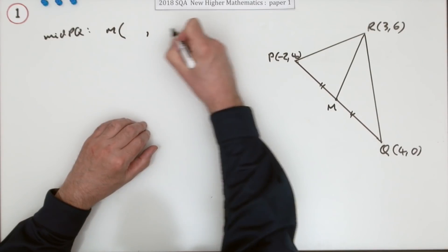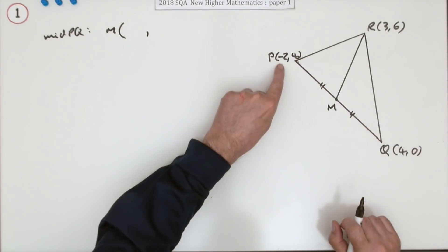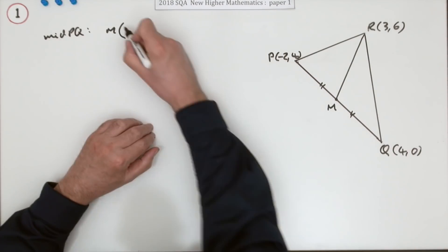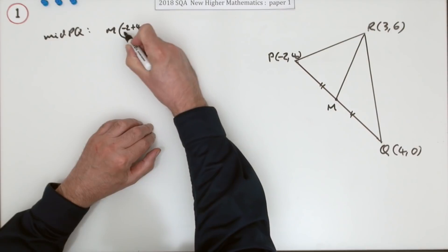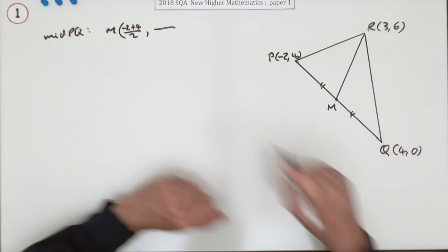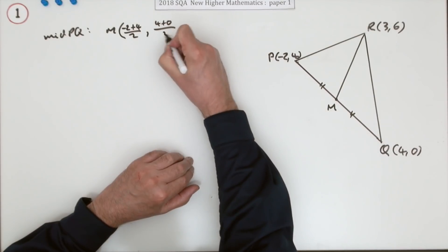If you're not so sure, then you can just take the average of them. So what about the average of the x's? Negative 2 and 4. Negative 2 plus 4, add them and half it. And I'll just do the same with the other one, the y coordinates. 4 and 0, half it.